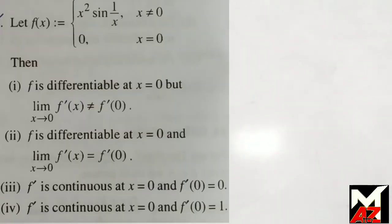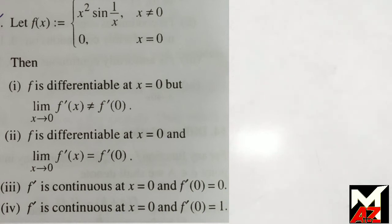The next question: Let f(x) = x² · sin(1/x) for x ≠ 0, and 0 for x = 0. Then: Option 1, f is differentiable at x = 0 but lim(x→0) f'(x) ≠ f'(0); Option 2, the same but equal; Option 3, f' is continuous at x = 0 and f'(0) = 0; Option 4, f' is continuous at x = 0 and f'(0) = 1. We first differentiate from the definition and get f'(0) = lim(x→0) [f(x) − f(0)] / (x − 0).